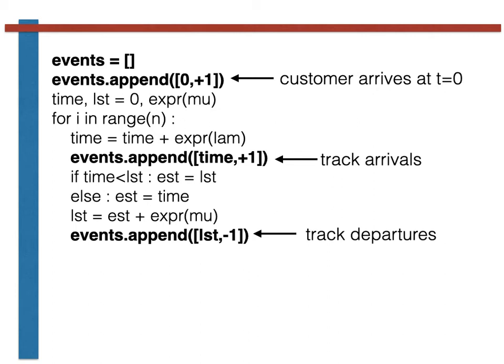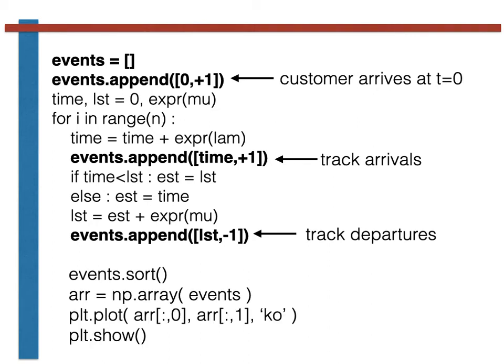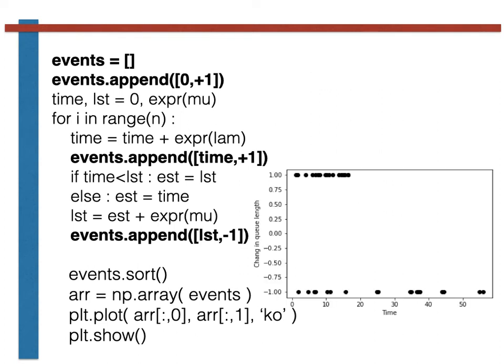Once we have this list of all the arrival and departure times, we can sort the list into ascending order by time. With the array sorted, we can, if we wish, draw a graph like the one shown here. This graph shows the times at which the queue changed length on the x-axis. On the y-axis, we then show whether the queue's length increased by one or decreased by one at that time.